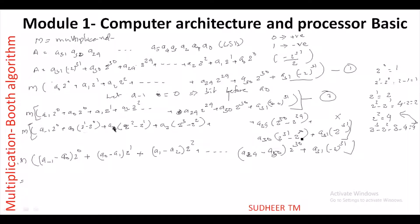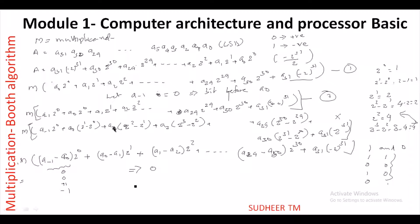The four possibilities for consecutive bits and their differences are: both 0 → difference = 0; both 1 → difference = 0; current bit 1 and next bit 0 → difference = +1; current bit 0 and next bit 1 → difference = −1. So there are three possible outcomes: 0, +1, or −1.